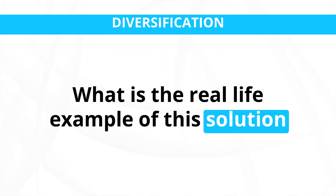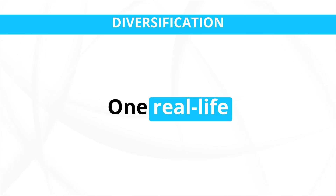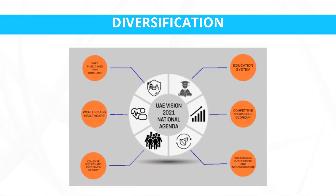A real-life example of diversifying the economy is the United Arab Emirates. Historically dependent on oil revenues, the UAE has been actively working to diversify its economy through initiatives such as the UAE Vision 2021. The country has invested in sectors like tourism, finance, real estate, and renewable energy, aiming to reduce reliance on oil and create a more sustainable and diversified economy.